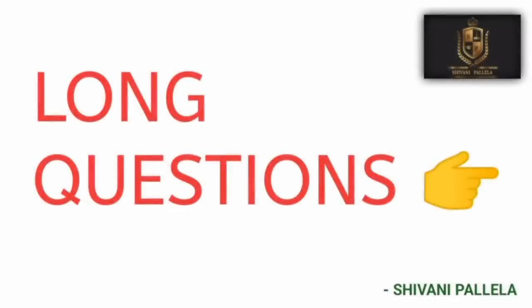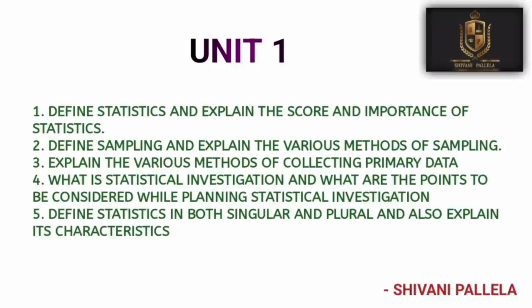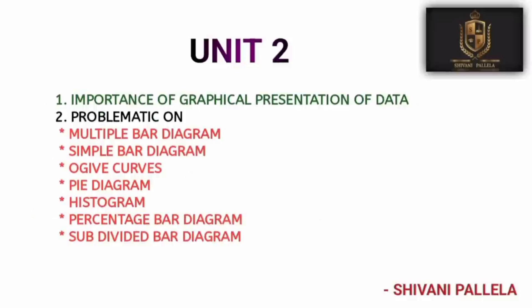For long questions in Part B, unit one is theory only. Important questions are: methods of sampling, 'What is Statistics — explain its nature, importance, and scope,' and various methods of collecting data. These three questions are important from unit one.